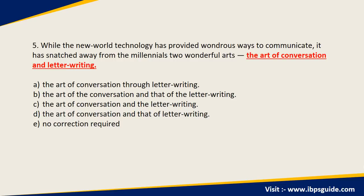Option C says 'the art of conversation and the letter writing'. If they are two independent things, you don't need 'the', and if you're saying they are both the same, 'the' has to be at the beginning. You cannot add 'the' only for the second option — that is grammatically incorrect. So Option C is incorrect. Option D says 'the art of conversation and that of letter writing'. Here, 'that' points to the art — equivalent in meaning to 'the art of conversation and the art of letter writing' — clearly showing they are two different arts, as mentioned in the sentence. Therefore, Option D is the correct answer: 'the art of conversation and that of letter writing'.